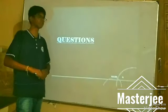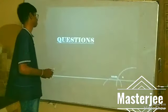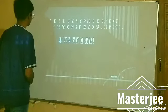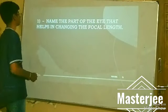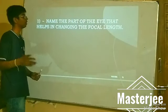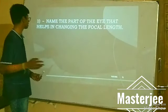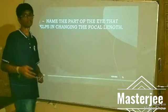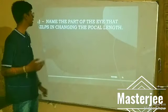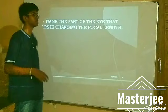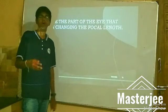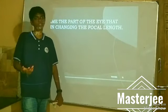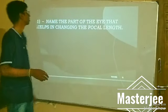Now for some questions. First question: Name the part of the eye that helps in changing the focal length. Obviously, it is the ciliary muscles. The ciliary muscles in the eye help in changing the focal length.